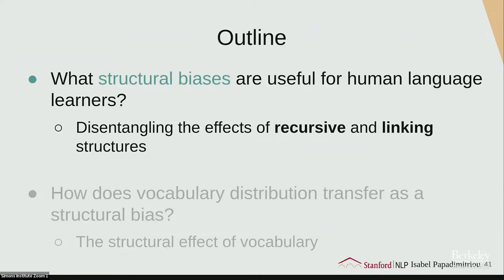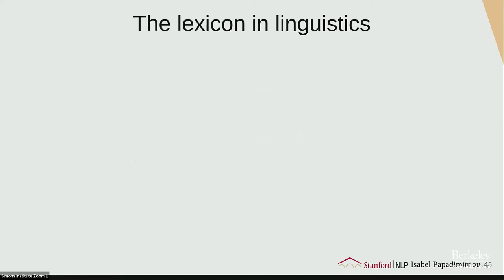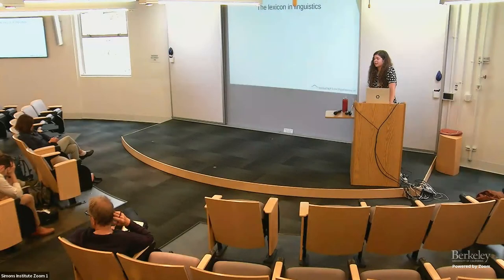Moving on to vocabulary — a much shorter section. Vocabulary is a big part of non-human communication understanding. The lexicon is very important in linguistics — a good amount of structure is in the vocabulary. Apart from distribution, there's structure in meaning and grammar: vocabulary items have properties like being transitive verbs, and constructions like 'let alone' encode structural information about what comes before and after. In many ways, the lexicon holds a lot of the grammar that forms our language.